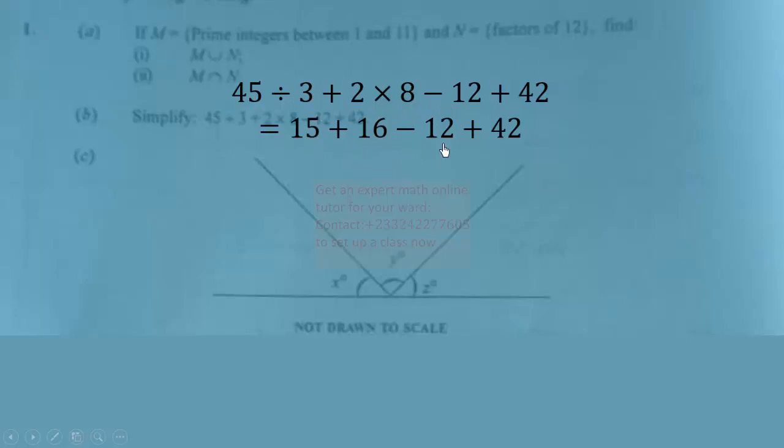Now we can subtract and add simultaneously, but let's regroup this so that we can understand the solution. So this is the same as 15 + 16 + 42 - 12. Now 42 minus 12 will give us 30, and 15 plus 16 will be 31. Then we can easily add 31 and 30, which will give us 61.